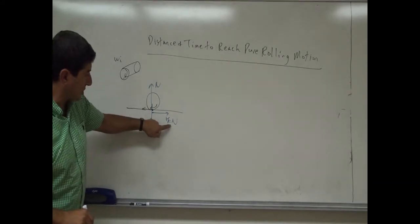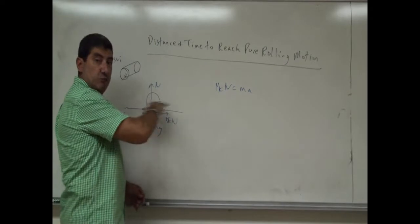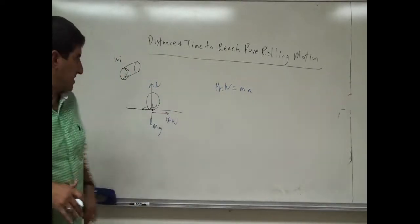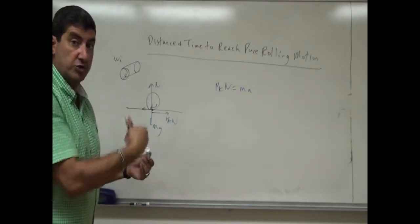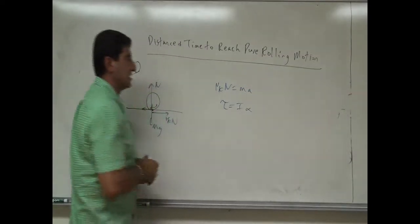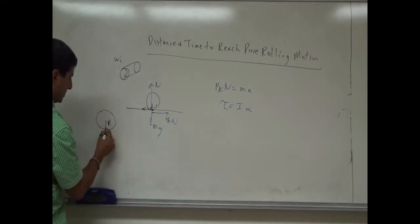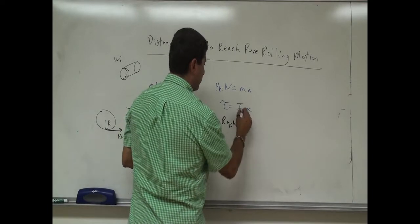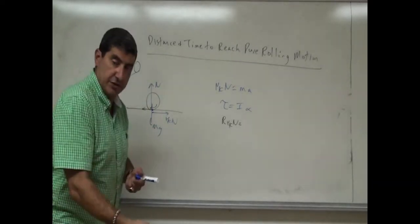This friction force will accelerate the object to the right. So μk·N = m·a. In terms of translational motion, the kinetic friction force accelerates the object translationally, but it fights against the rotation. When an object is rotating and I exert a force on the bottom, it will tend to reduce the rotation rate — it exerts an opposite torque. So the torque equals the moment of inertia times alpha.